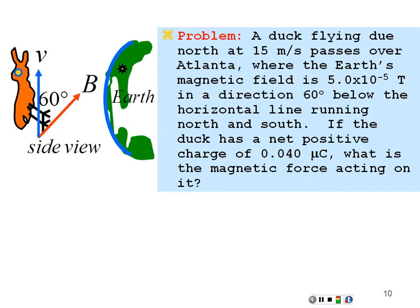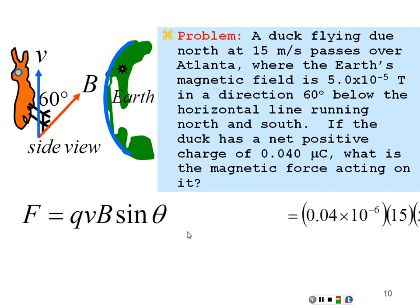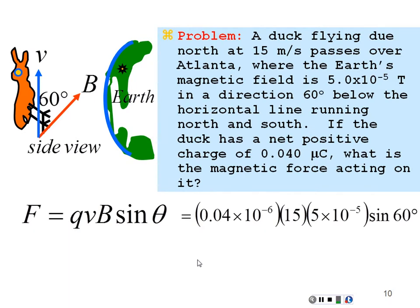The magnitude of the force is F = qvB sin θ. We have a charge of 0.04 microcoulombs, moving at 15 m/s, in Earth's magnetic field of 5 × 10⁻⁵ T, and the angle between the velocity and field vectors is 60 degrees. Taking sin 60° gives a force of 2.6 × 10⁻¹¹ N.